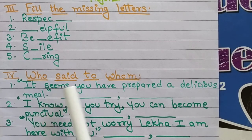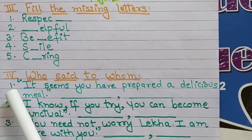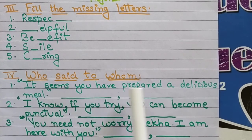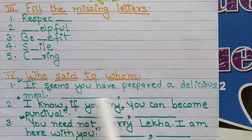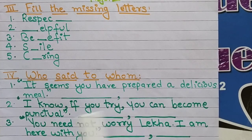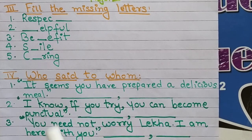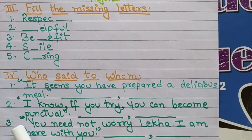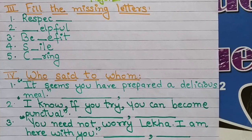Next comes the 'who said to whom' section — kisne kisse kaha? First one: 'It seems you have prepared a delicious meal.' Kisne kaha aur kisse kaha? You have to write it down in this blank. Second: 'I know if you try, you can become punctual.' Kaun bola ye cheez ki try karoge to aap punctual ban sakte ho? You have to write it down here. Third: 'You did not worry, Lekha. I am here with you.' Yeh kisne kaha aur kisse kaha? You have to write it down here in this blank.